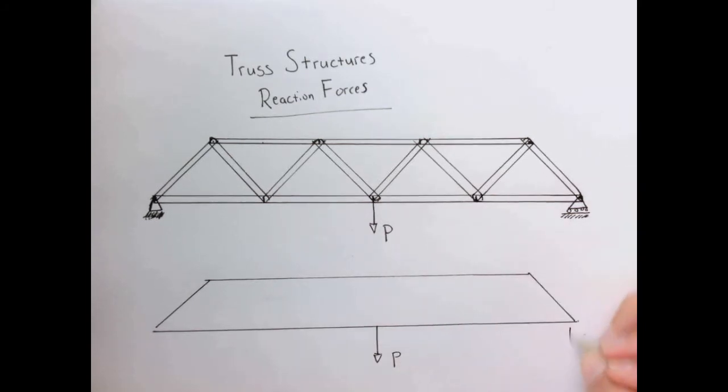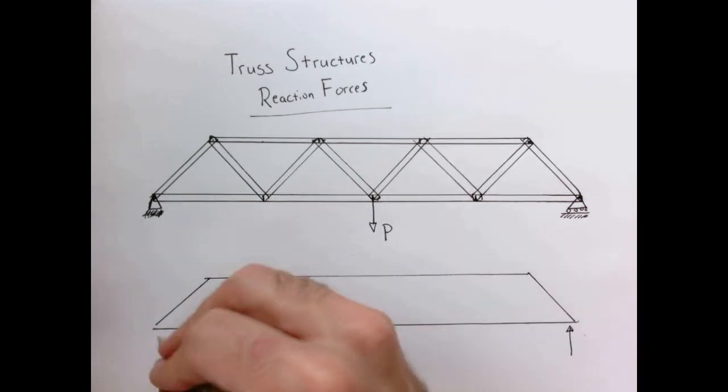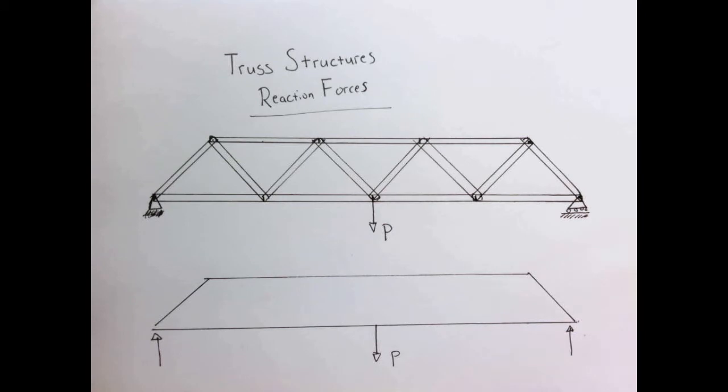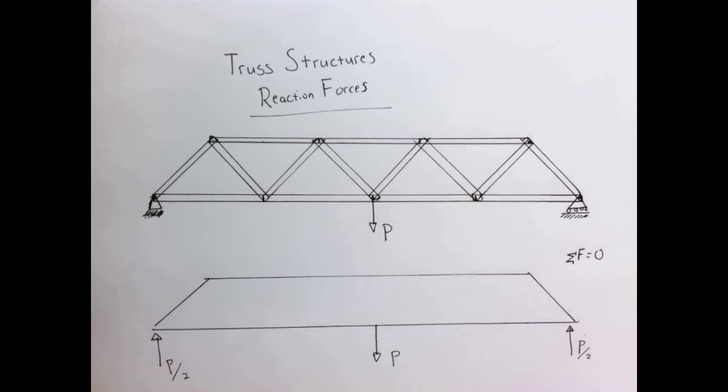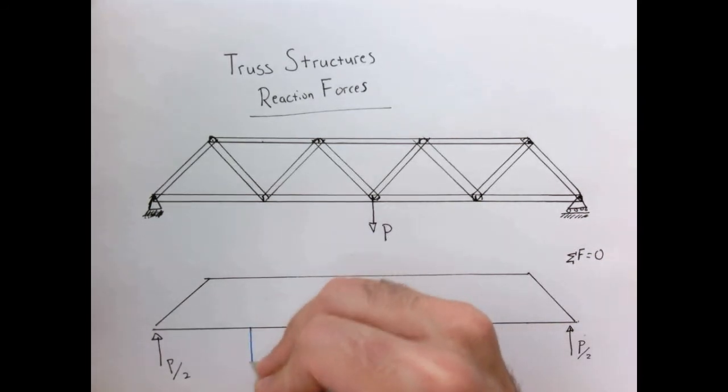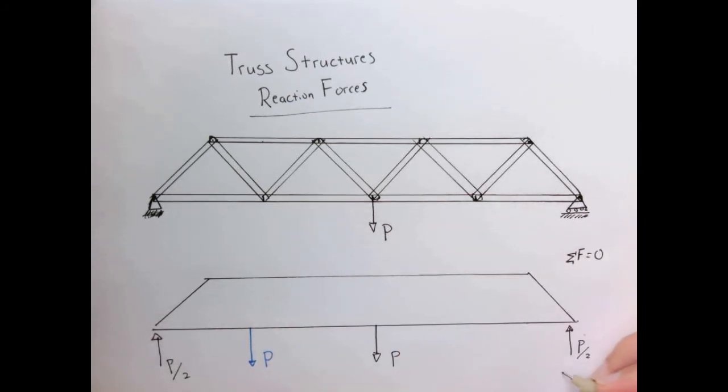I've got my load P here in the center, and we have some reaction forces here at the two ends. By symmetry and knowing that the sum of the forces in the vertical direction has to equal zero, we can guess that the reaction force simply splits between these two. However, if we now drive the car to park over here and another car comes and stays here, then what happens to these reaction forces? How do we calculate what those are? So that's the topic of this lecture.